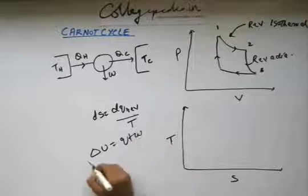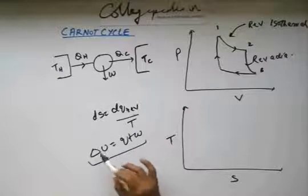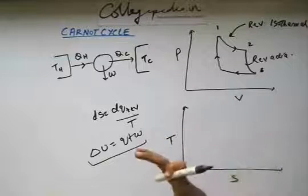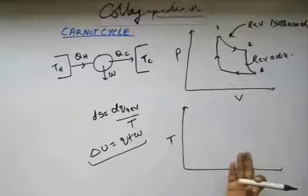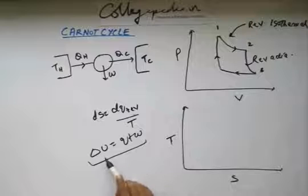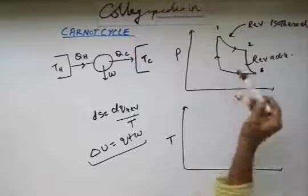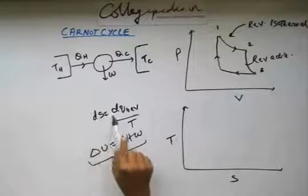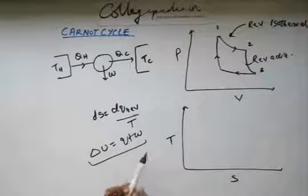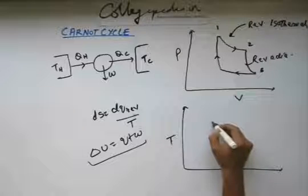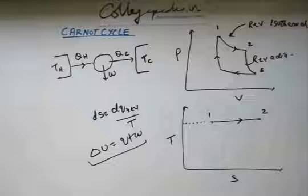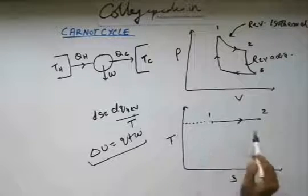By the first law of thermodynamics, delta U equals q plus w. Since delta U is zero (temperature is constant), and the gas is doing work by expanding, energy is being extracted from the gas. But internal energy isn't changing, so heat must be given to the gas. From 1 to 2, q is positive, so ds is positive — entropy is increasing. On the temperature-entropy graph, this process appears as a horizontal line at constant temperature with entropy increasing from 1 to 2.